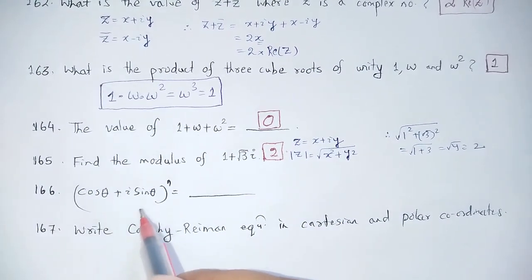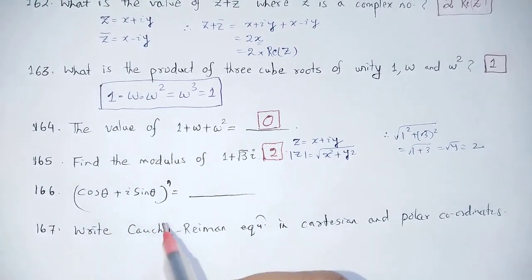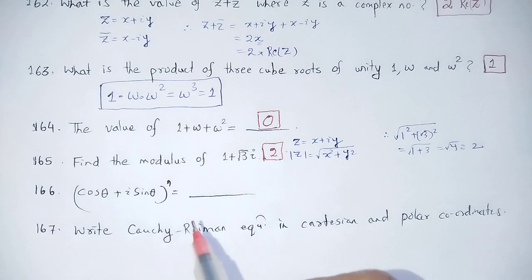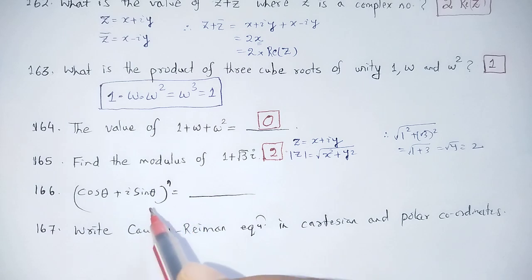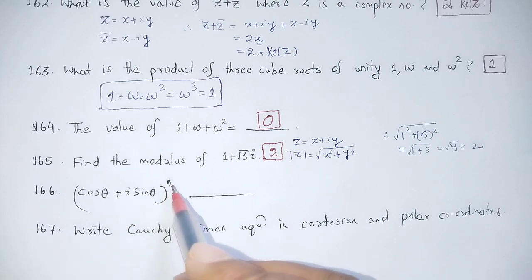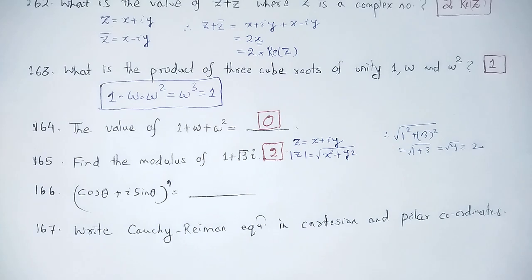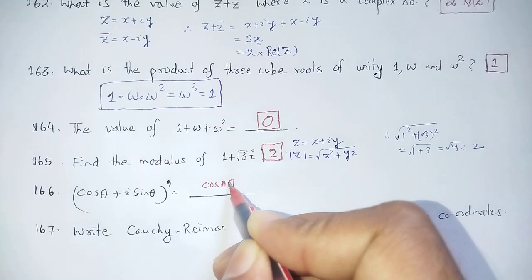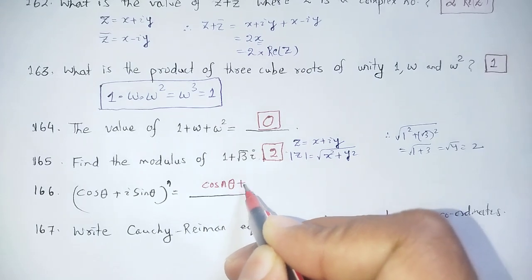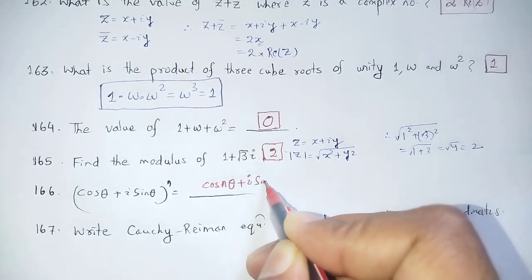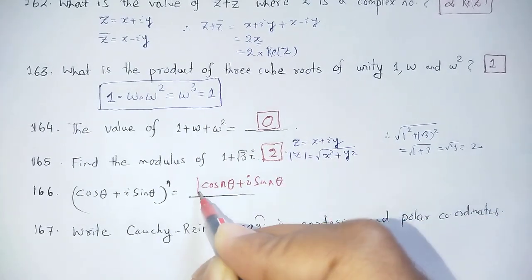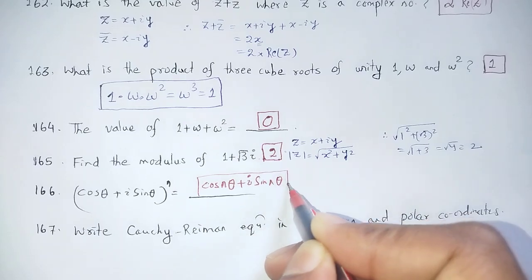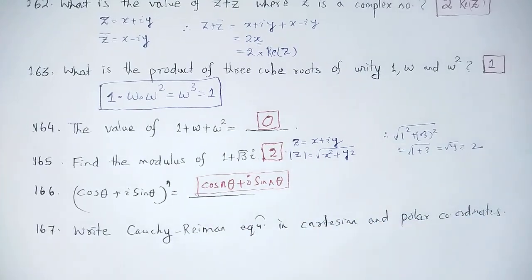Next: (cos θ + i sin θ)^n equals what? This is De Moivre's theorem. The nth power value gives cos(nθ) + i sin(nθ).